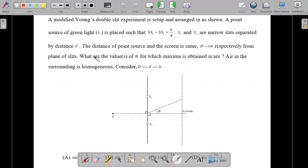SS1 and SS2 are narrow slits separated by a distance d. So the distance between the two slits is the usual symbol that we use as small d. The distance of point source and the screen is same, and capital D is equal to 1 meter respectively from the plane of slits. So what he's trying to tell you is that this distance from the source to the slits is capital D and also from the slits to the screen is also capital D.